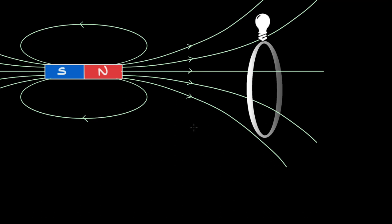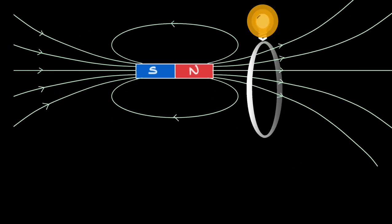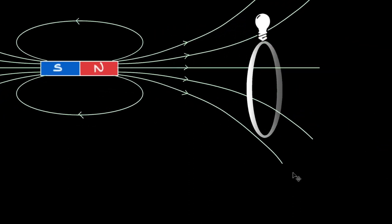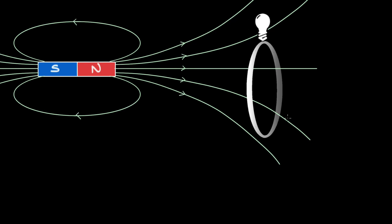If we reduce the time by one-fourth and take 1 second to move the magnet between the same points, this led Faraday to conclude that the magnitude of EMF induced is equal to the rate at which the magnetic flux through the coil changes.